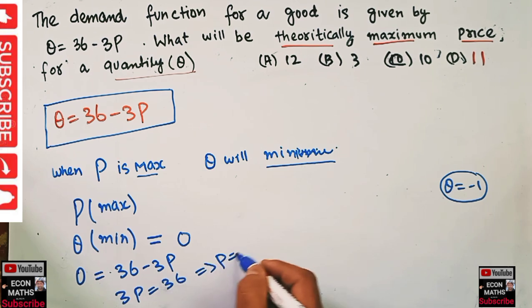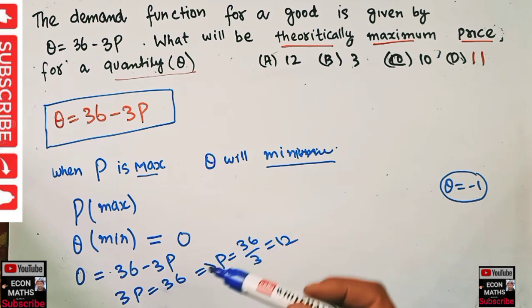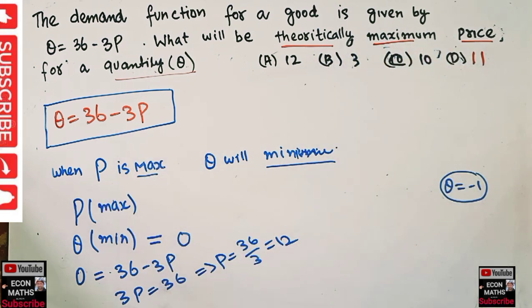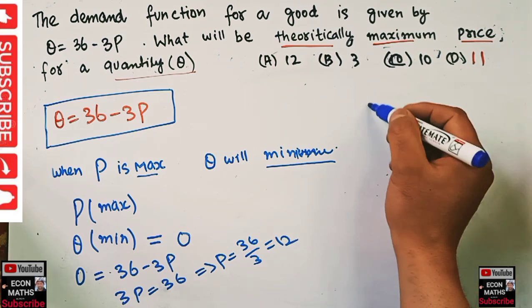Which implies P = 36/3, which comes out to be 12. So the theoretically maximum price given this demand equation will be equal to 12. You can also draw the graph here if you want.